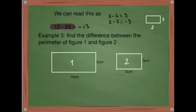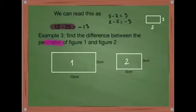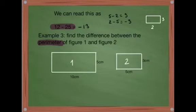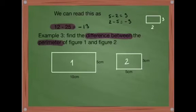Example 3: find the difference between the perimeter of Figure 1 and Figure 2. Check the vocabulary 'perimeter' in your Thai dictionary. The key word here is 'difference between' — difference between means we have to use minus.